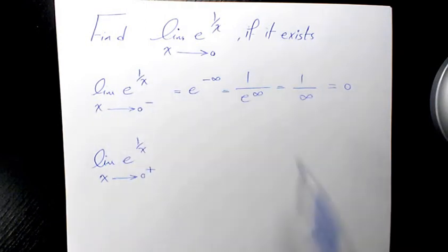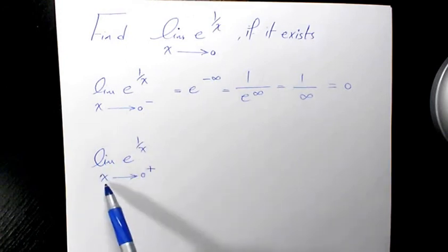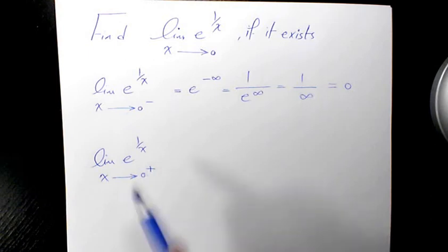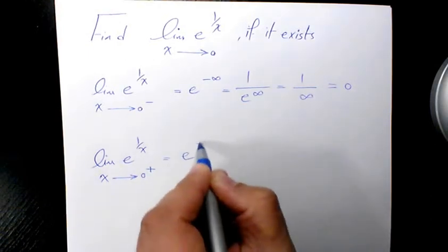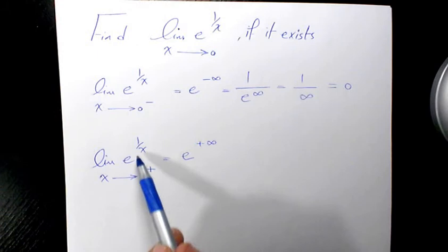side, the limit is going to be 0. However, if you have e^(1/x) and x is approaching 0 positive, you're going to have e^(+∞) because that's a